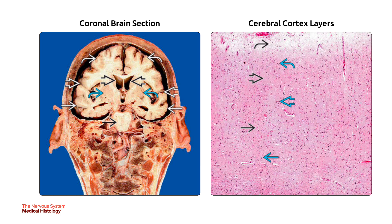On the right is an H&E section showing the six layers of the cerebral cortex between the pia mater on top and subcortical white matter at the bottom: molecular layer (curved black arrow), external granular layer (curved blue arrow), external pyramidal layer (bold black arrow), internal granular layer (bold blue arrow), internal pyramidal layer (single black arrow), and the polymorphic or multiform layer (single blue arrow).